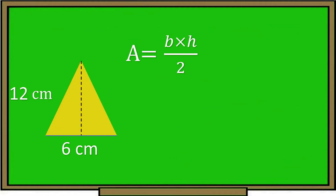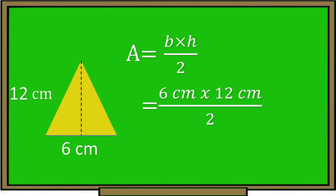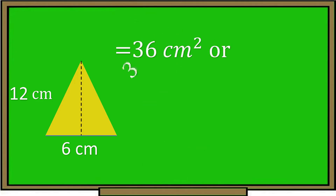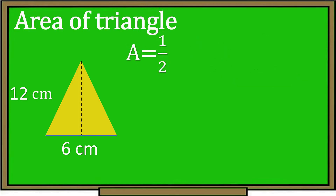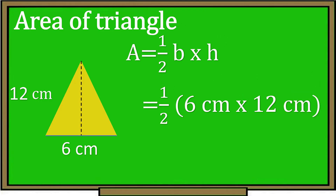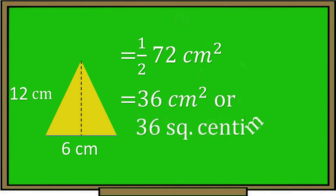Area of triangle equals base times height divided by 2. Let's substitute: the base is 6 centimeters and the height is 12 centimeters. 6 centimeters times 12 centimeters equals 72 centimeters divided by 2, and the area of a triangle is equal to 36 square centimeters. We can also use: Area of triangle equals one half base times height. Substituting — one half, base is 6 centimeters, height is 12 centimeters. 6 times 12 equals 72 centimeters, so one half of 72 centimeters equals 36 square centimeters. The area of a triangle is 36 square centimeters.